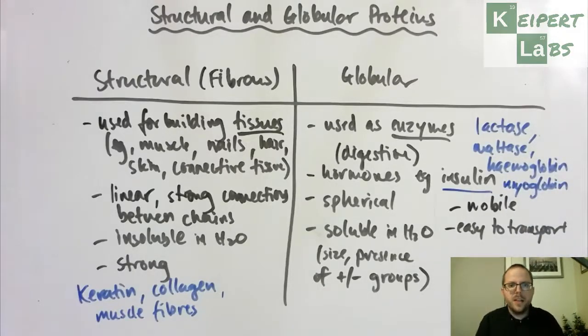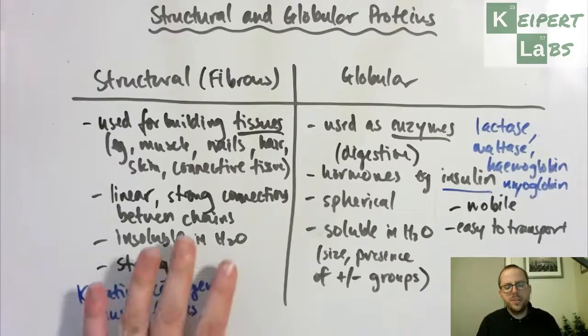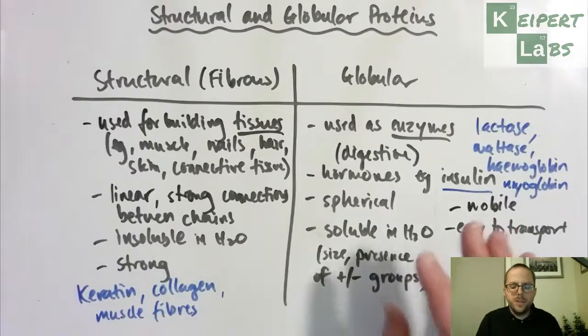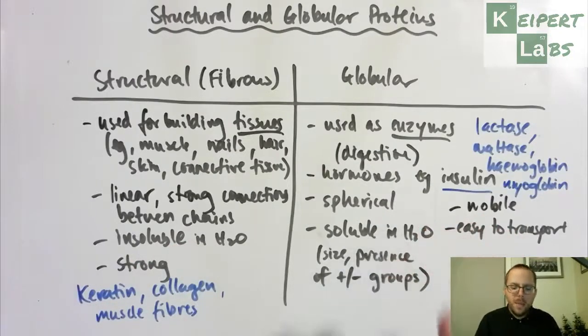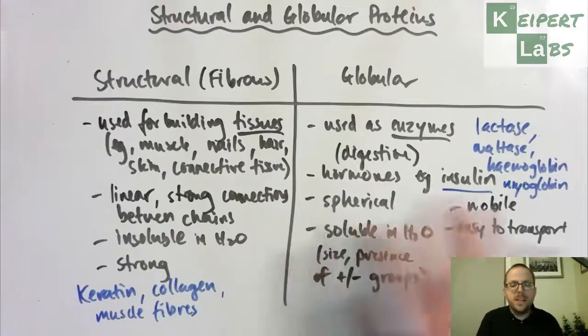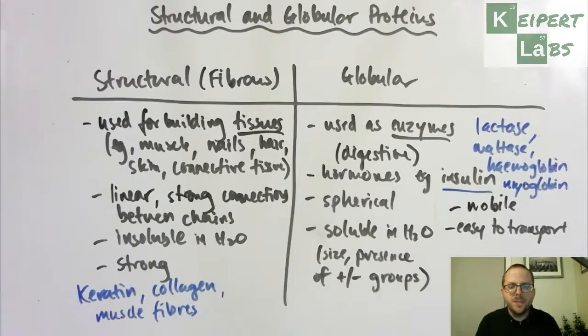So you can see that depending on exactly how that protein is structured, how it is put together, that it has very different uses. We can use it to build strong tissues, or we can use them as small transport mechanisms to facilitate chemical reactions, to move substances from point A to point B, like oxygen, to dissolve easily in and out of cells and other tissues to help move things around. Thanks very much for watching. Bye for now.